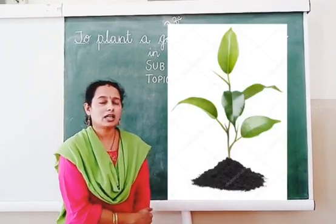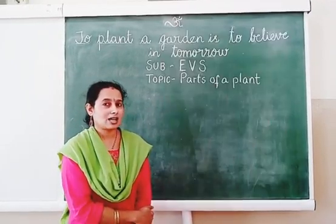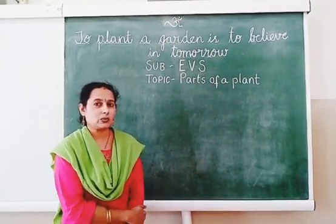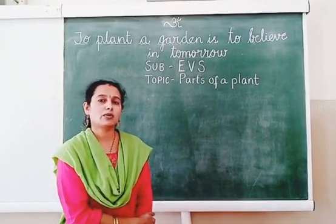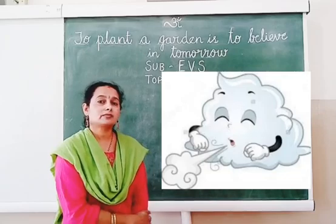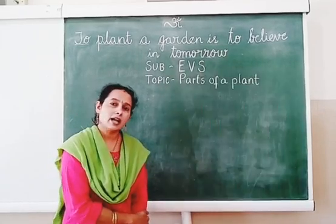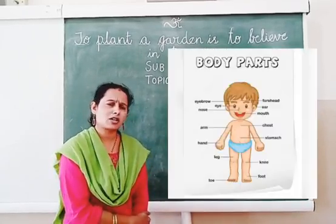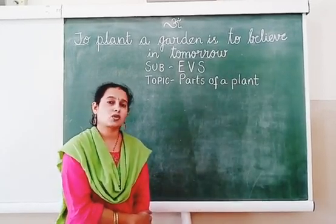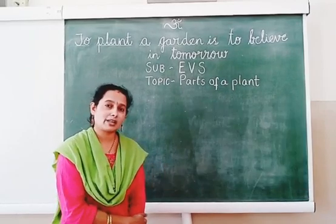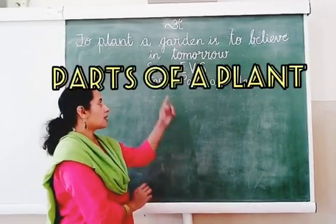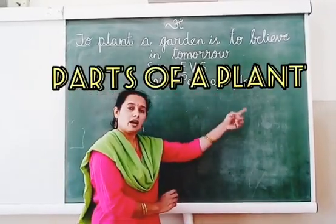Plants are living things. In the last class you have seen what a plant needs to grow. Like me and you, even plants also grow. They need water, sunlight, air, soil and space to grow. You have already learned parts of the body. The same way, even plants also have parts. So now I think you can guess what today's topic is. Today's topic is parts of a plant.